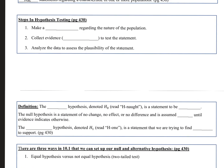The steps in hypothesis testing: first, make a statement regarding the nature of the population. Second, collect evidence or sample data to test the statement. Third, analyze the data to assess the plausibility of the statement — just like with the coin example, where we had five tails and tried to figure out if cheating was plausible.